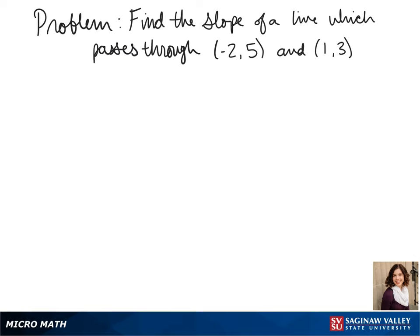Welcome to another day of algebra. Today we'll be finding the slope of a line that passes through negative 2, 5 and 1, 3.